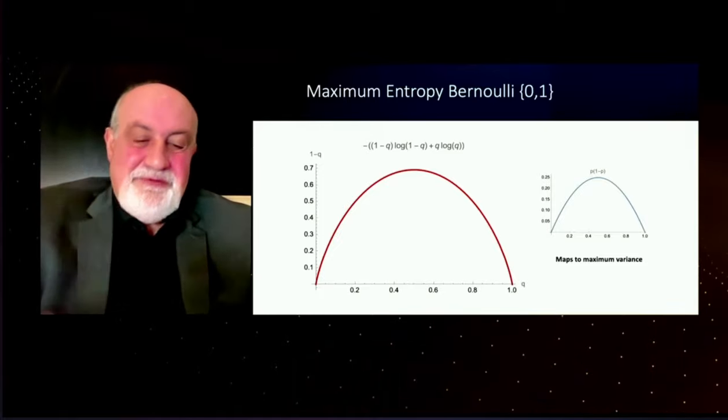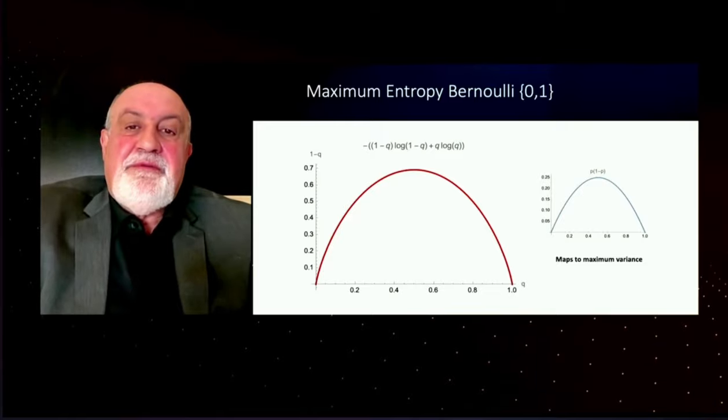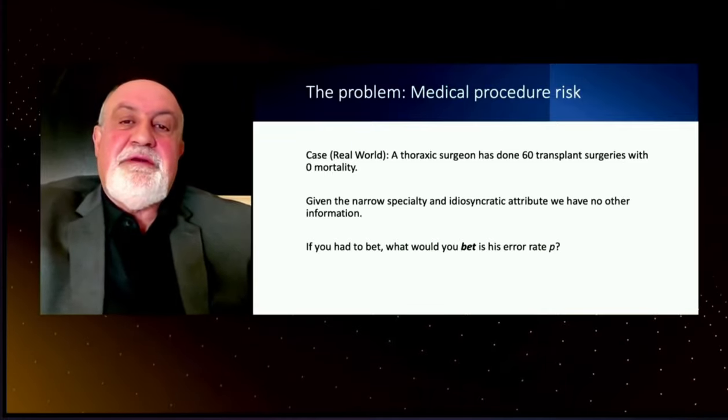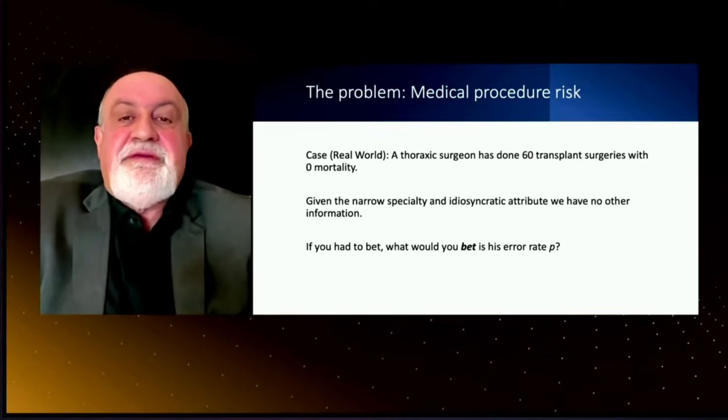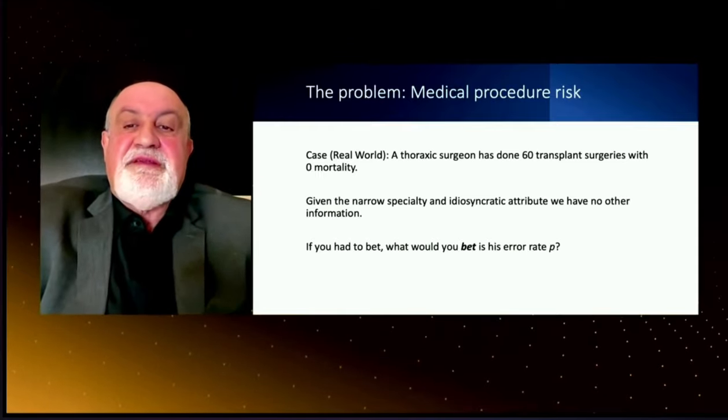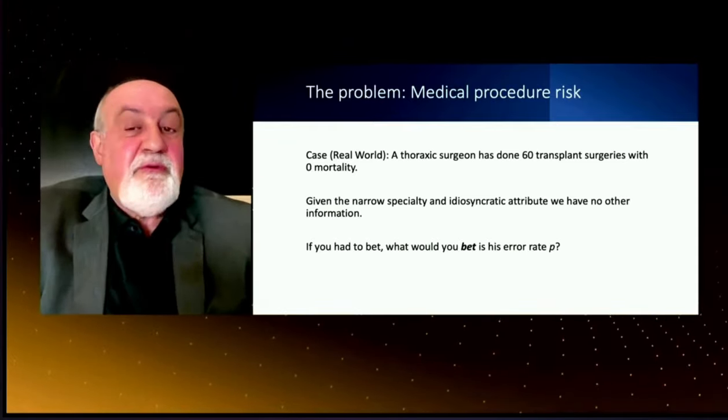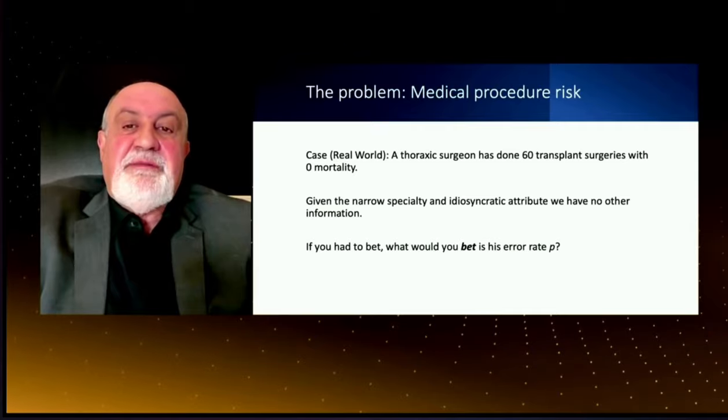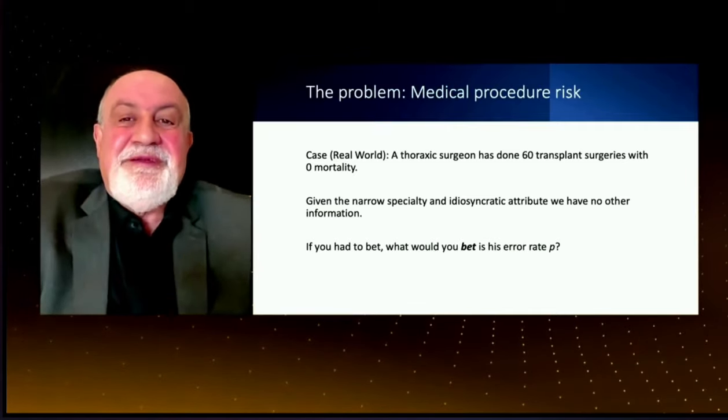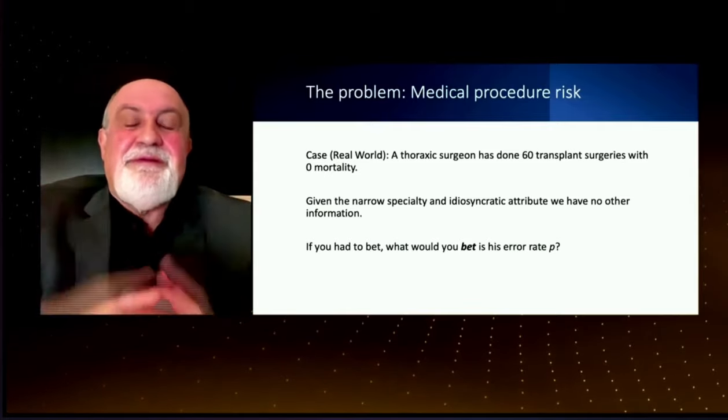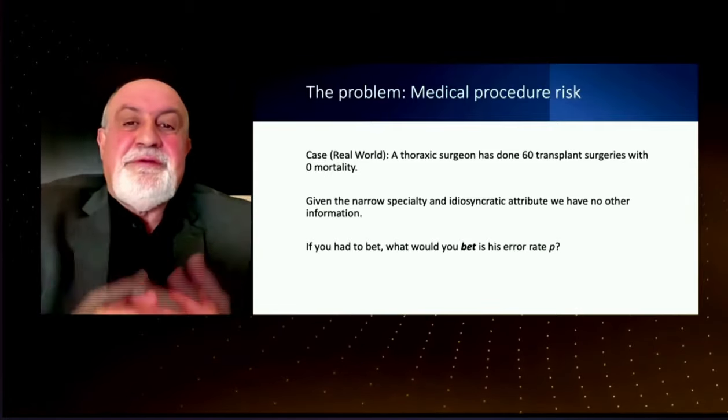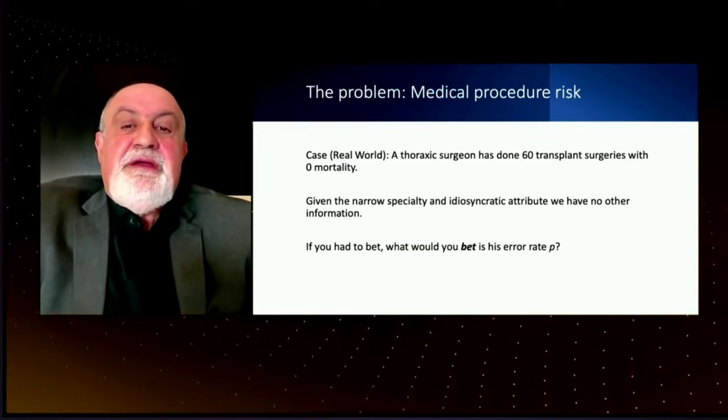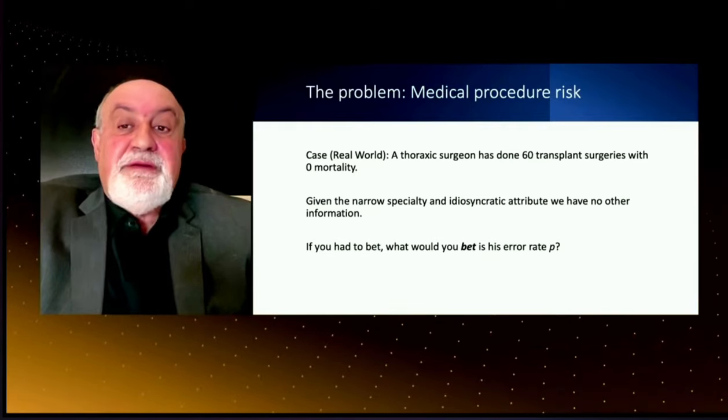Let's take the idea one step further with something a little more complex and apply it to a real world procedure where we have sums of Bernoullis. In fact, the surgeon performs 60 transplant surgeries or whatever complicated procedure, and we have no background information, no idea about what is the fair probability, whether he or she is above or below a benchmark. We have no idea. With 60 observations, how would you bet the error rates?